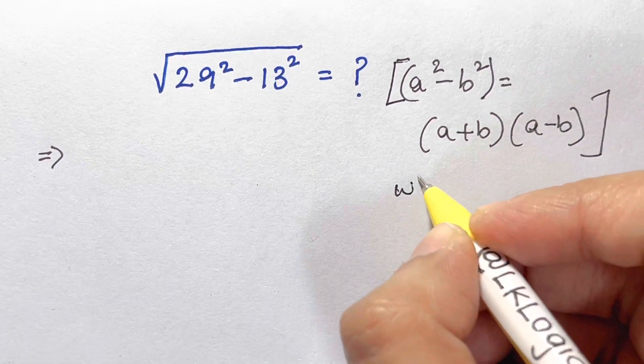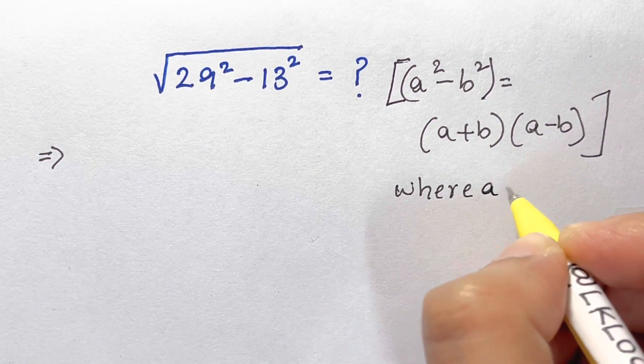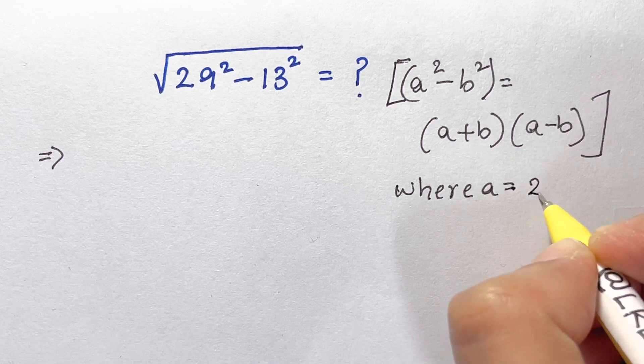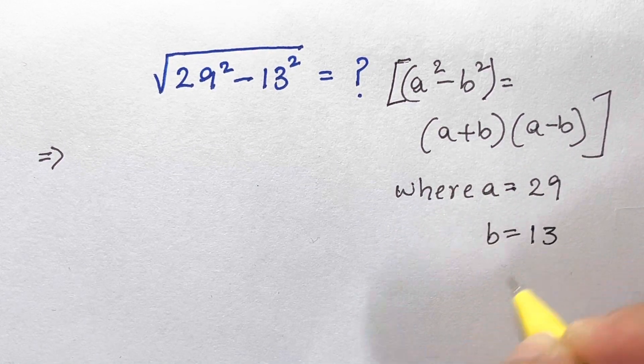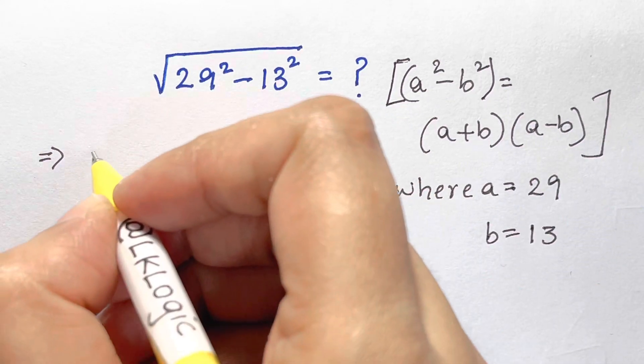And this identity we are going to substitute in this, where a is equal to 29 and b is equal to 13. So, let's put it here.